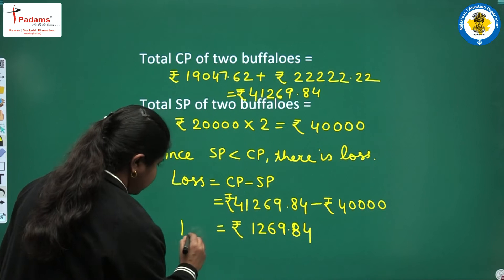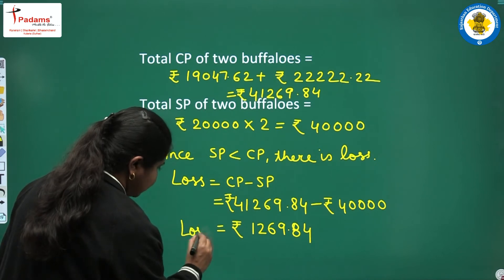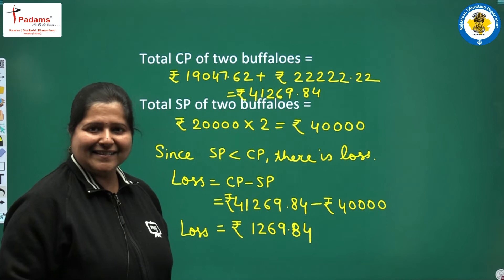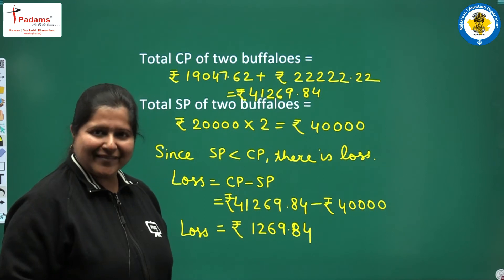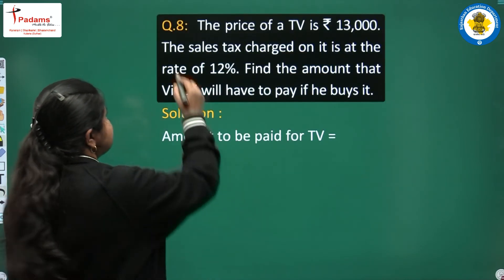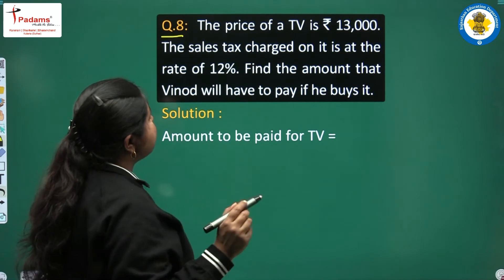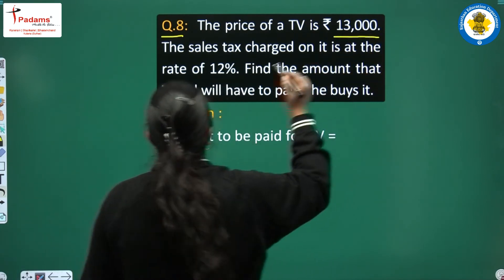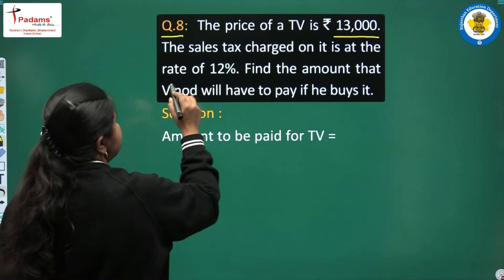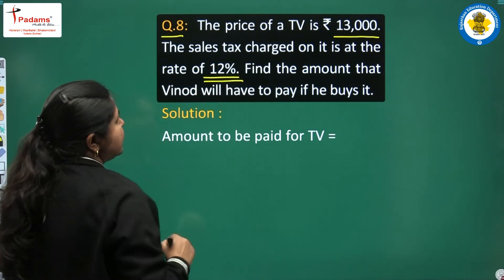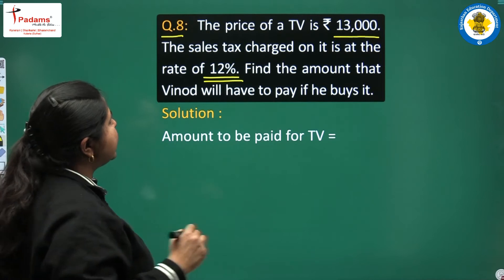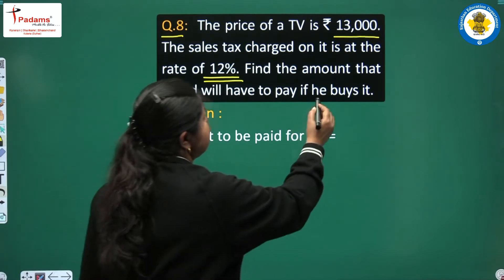So the overall loss is Rs. 1,269.84. I hope it is very much clear. Next we have question 8. The price of a TV is Rs. 13,000. The sales tax charged on it is at the rate of 12%. Find the amount that Vinod will have to pay if he buys it.